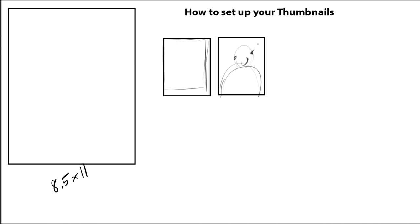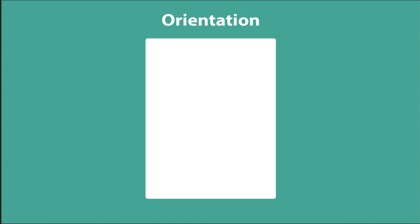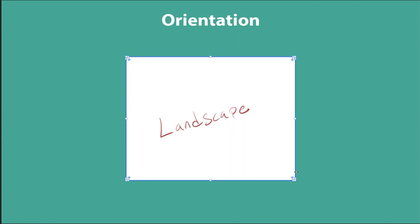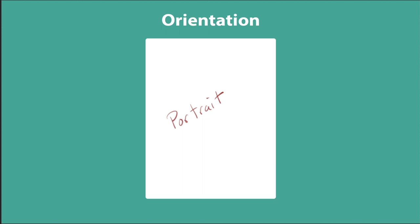This might seem basic, but you'd be surprised how many people don't understand the difference between orientation options. When setting up your paper, you have portrait and landscape. Just because a mode is called landscape doesn't mean you should only use it for landscapes, and vice versa — it's just what the orientation is called. Practice both orientations; stop drawing in only one or you'll really put yourself into a corner.